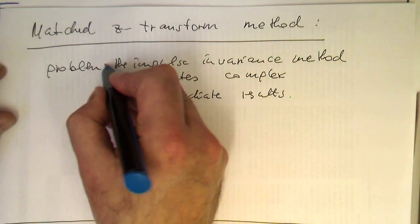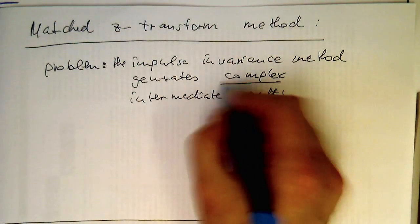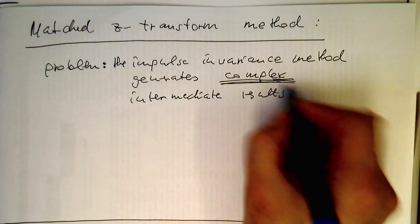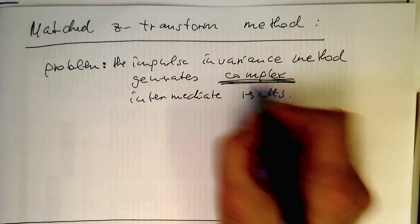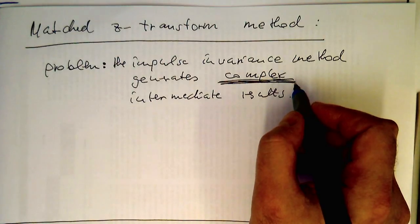The impulse invariance method generates complex intermediate results, and this is obviously for practical applications not great. Nobody would design an IIR filter with complex intermediate results.